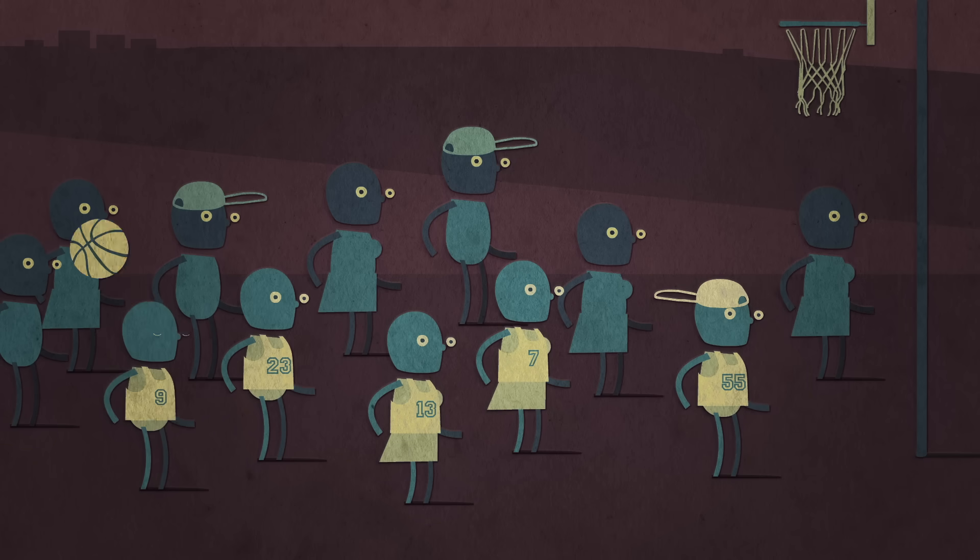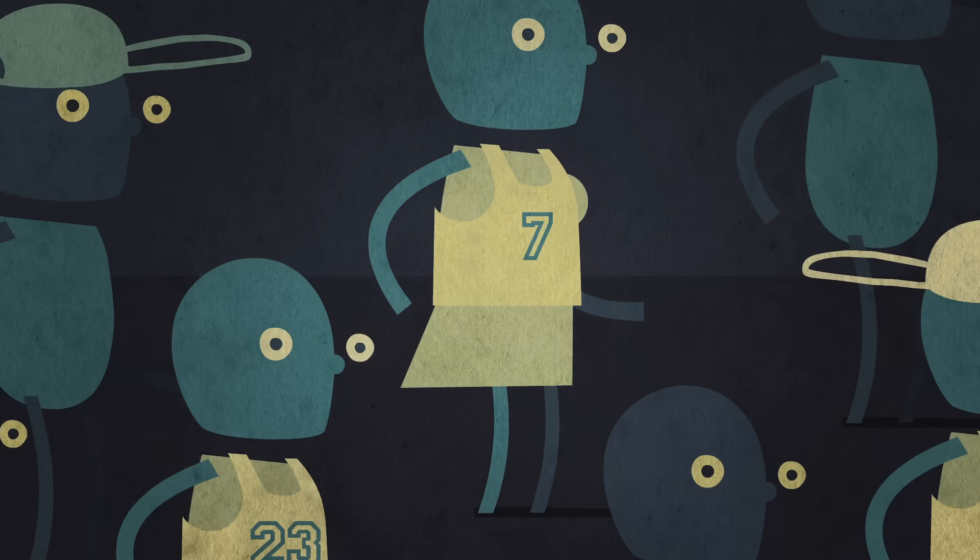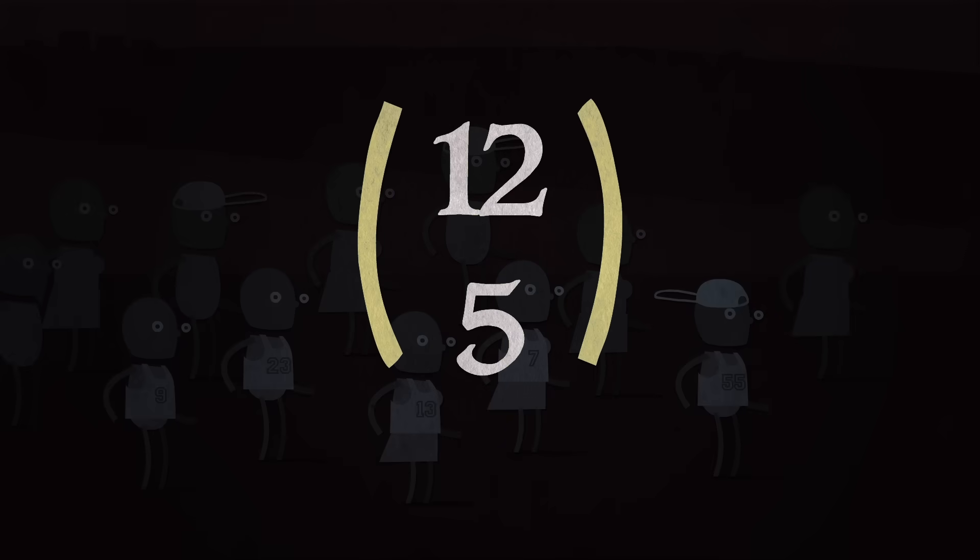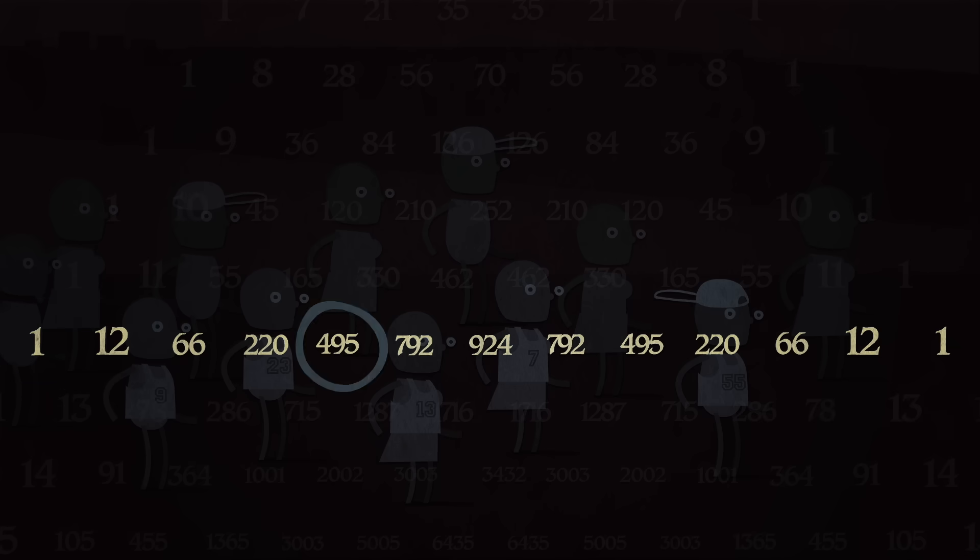Or, if you're randomly picking a five-player basketball team out of a group of 12 friends, how many possible groups of five are there? In combinatoric terms, this problem would be phrased as 12 choose 5, and could be calculated with this formula. Or you could just look at the sixth element of row 12 on the triangle and get your answer.